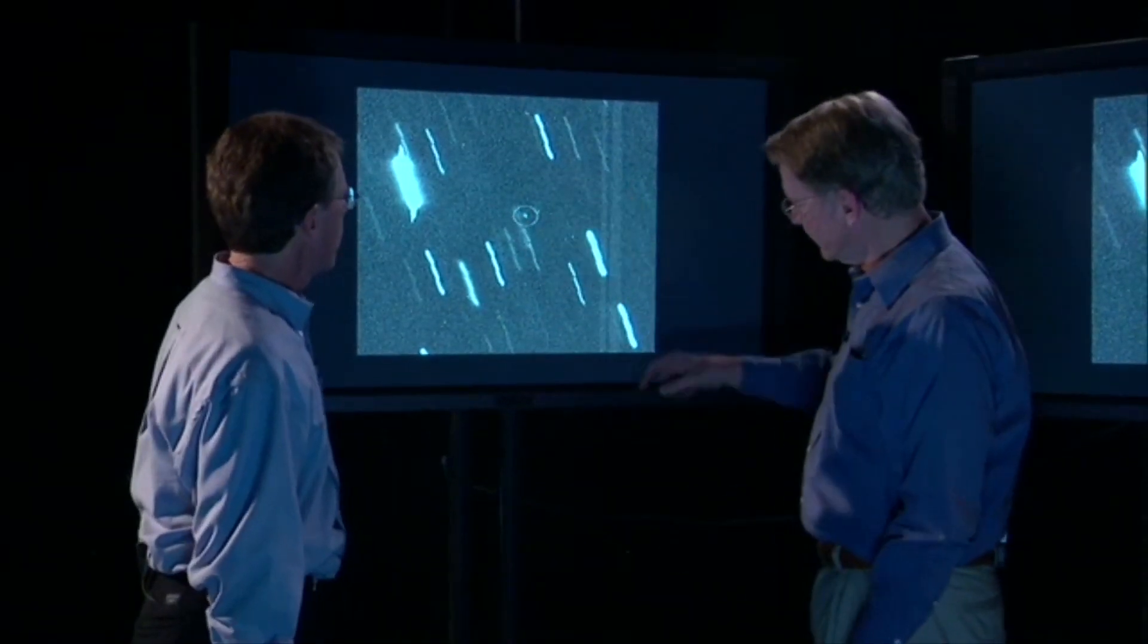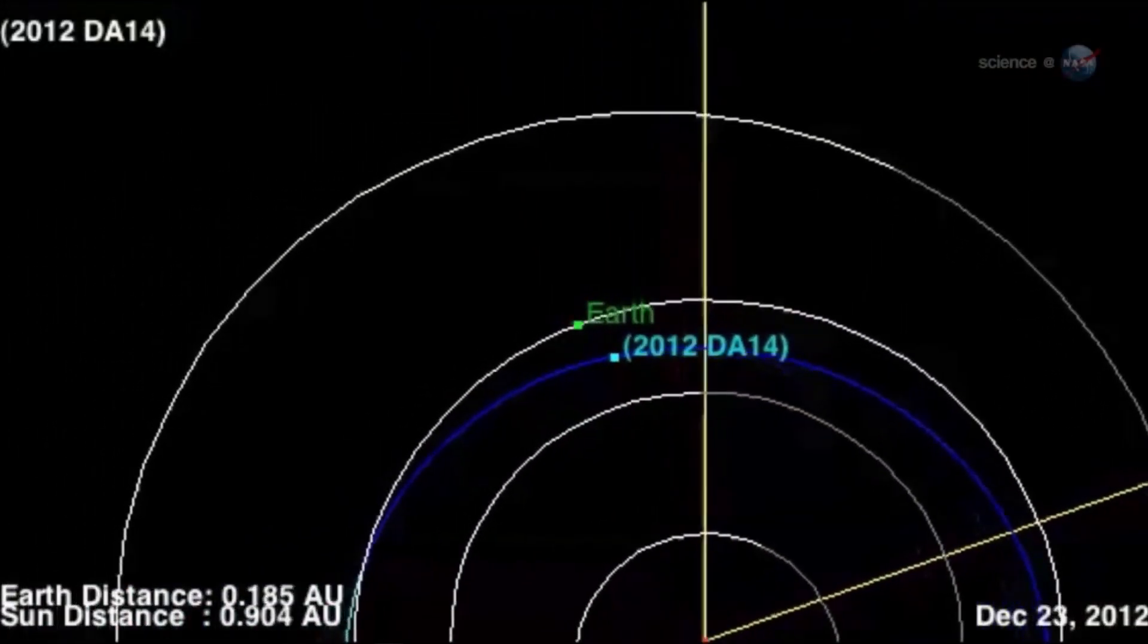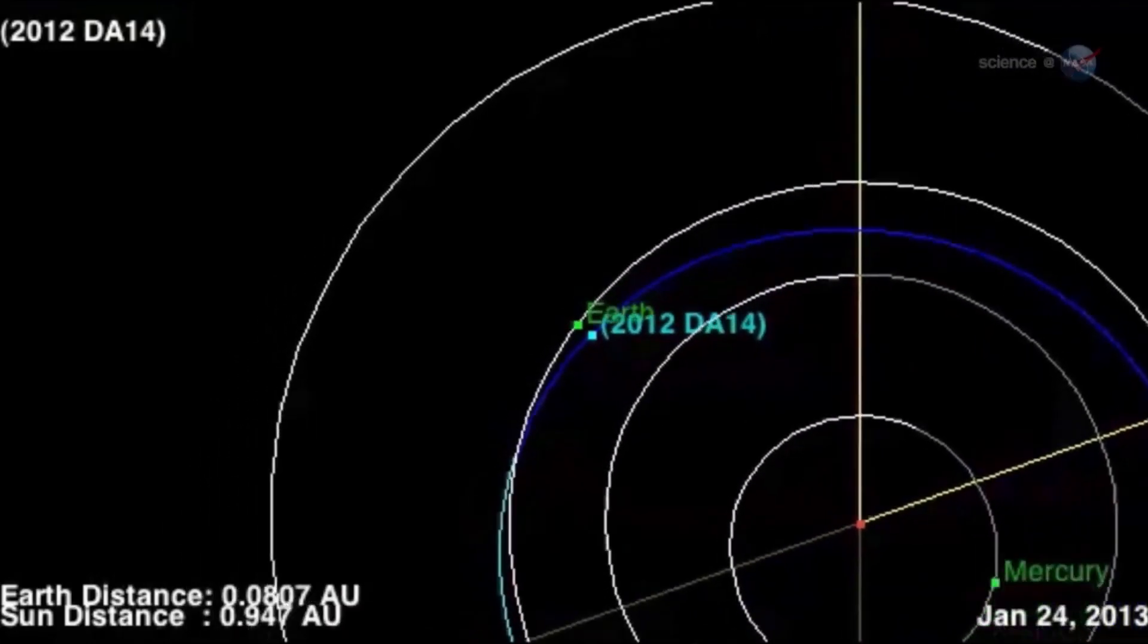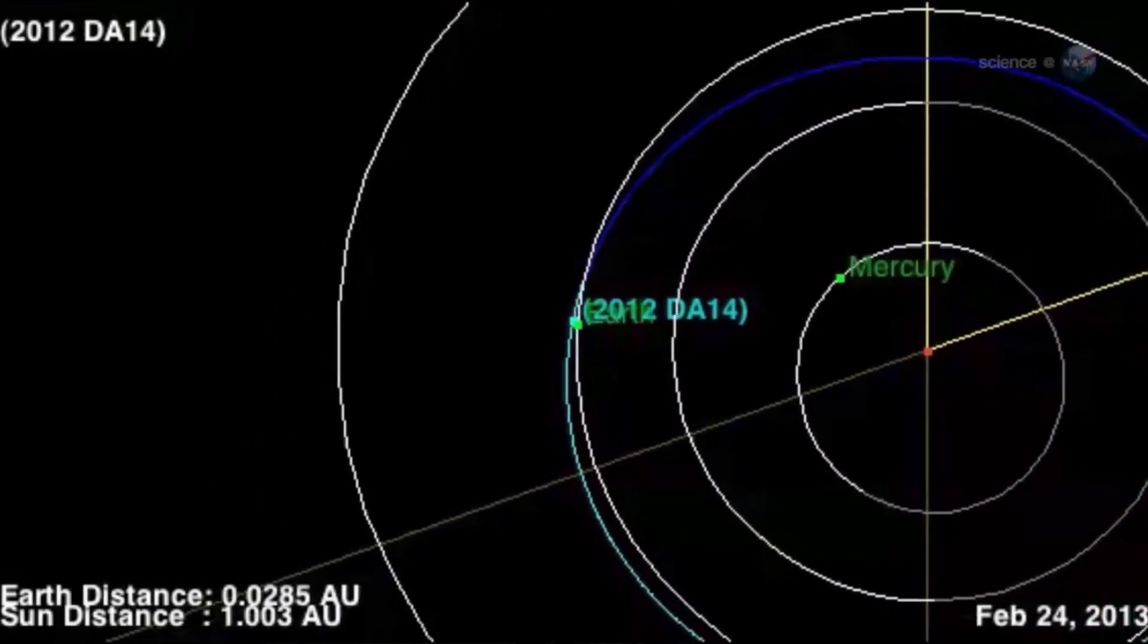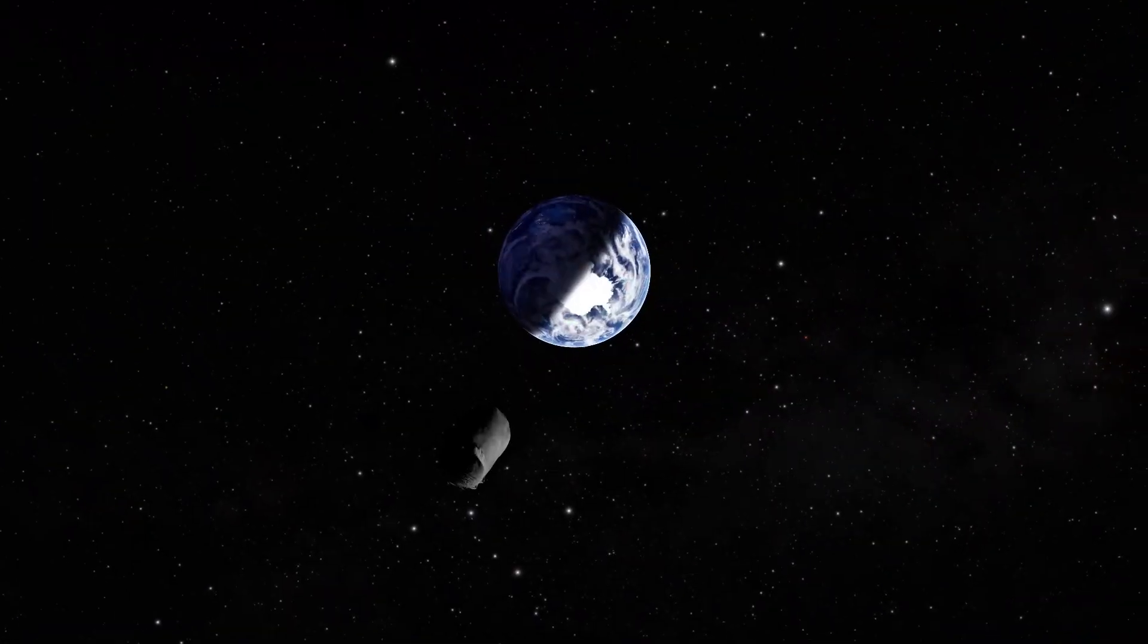You can get observations of where the object was at a particular time, and we take those observations at the Jet Propulsion Laboratory, and we create orbits. We fit an orbit to those observations, and then we run the orbit out into the future on our computers, and we make predictions of where these objects will be 100 years from now and every point in between.